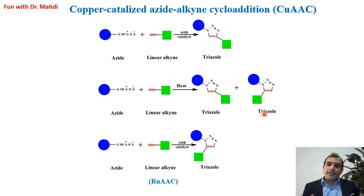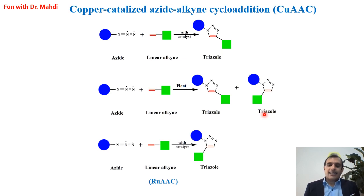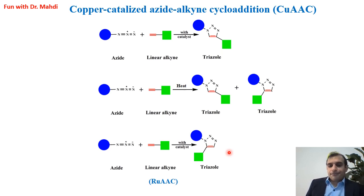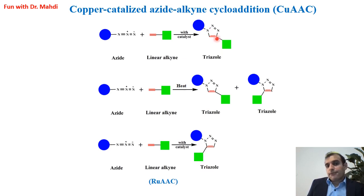We can use ruthenium instead of copper — ruthenium can be a catalyst. In this case, we call it ruthenium-catalyzed alkyne-azide cycloaddition. Then the product will be 1,5-triazole, but when we use copper, the product will be 1,4-triazole.